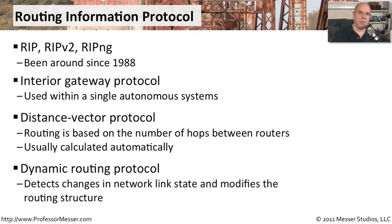RIP is also a dynamic routing protocol, which means that if there are any changes on the network, RIP will update the routing table to take those changes into account. RIP is able to understand if a new link comes on or if a link goes away, and update itself and converge the network accordingly.